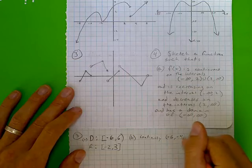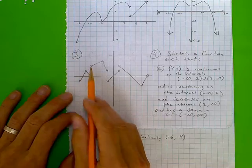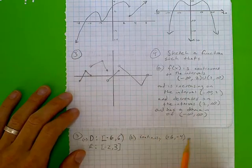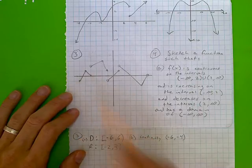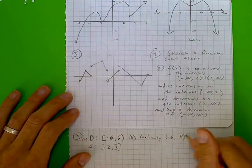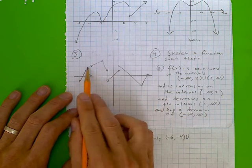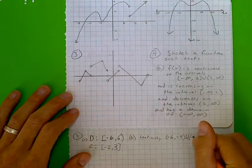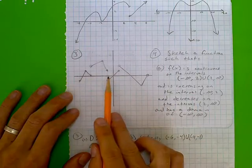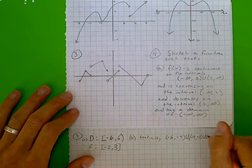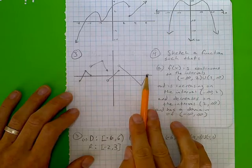Our graph is not actually continuous at negative 6, because that's where it ends, and it is not continuous at negative 4 because there's a jump. So even though there are dots there, we don't include the endpoints in our interval of continuity. The next section is from negative 4 to negative 1 on the x-axis. The next section is from negative 1 to positive 1. And then from positive 1 to positive 6.